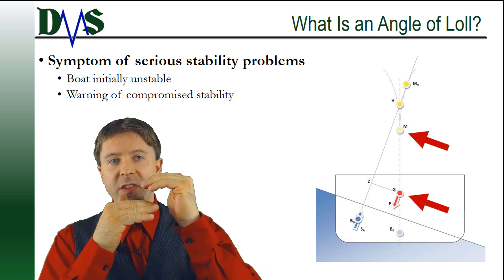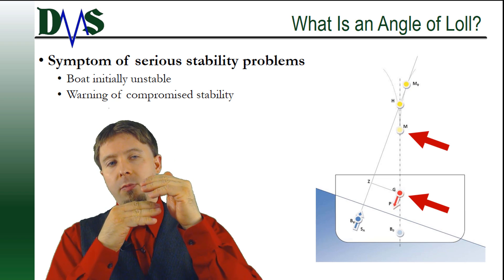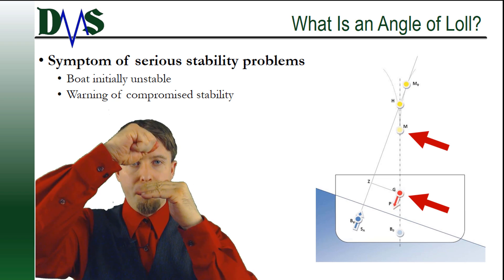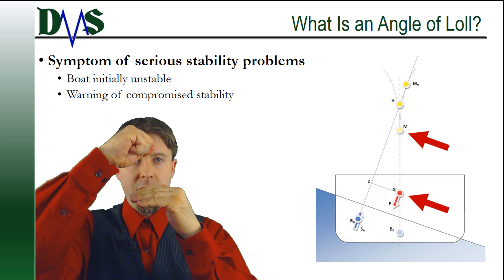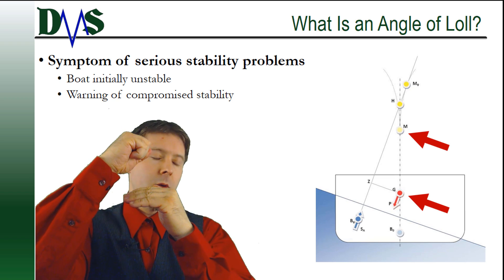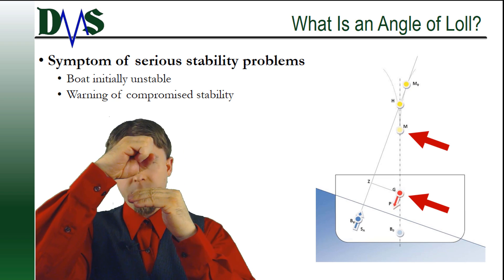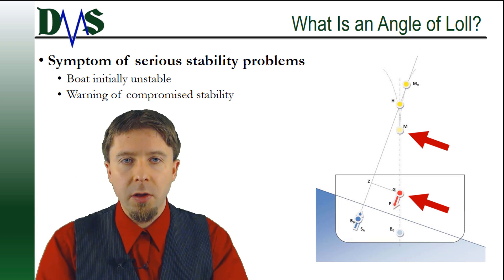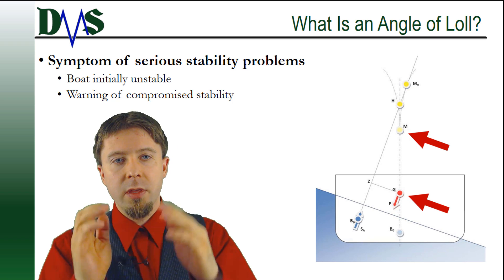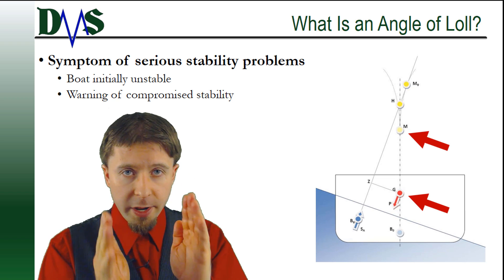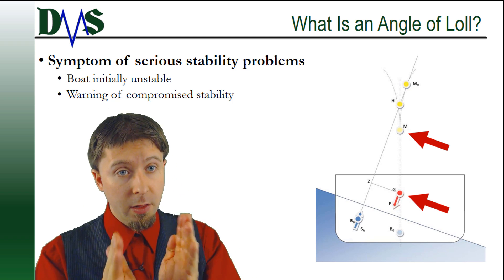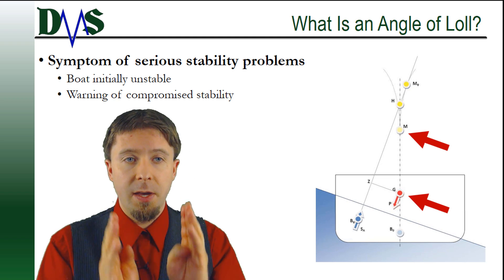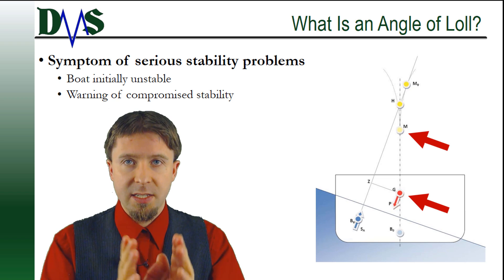With an angle of lull, when the ship is upright, point G is actually above point M. Bad, bad, bad. Because the end result is that within a small range of initial heel angles, the ship is unstable.